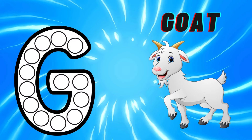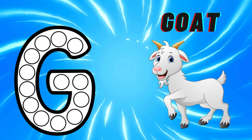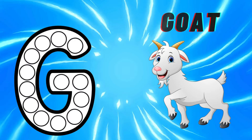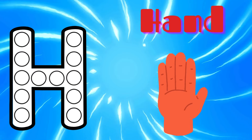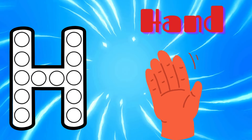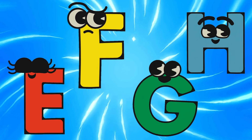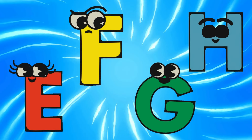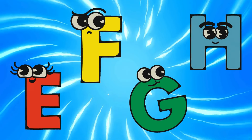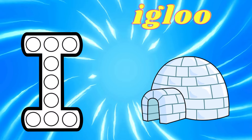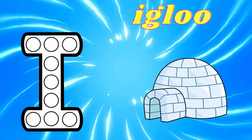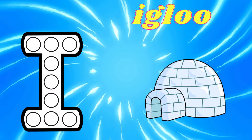G is for Goat, G-G-Goat. H is for Hand, H-H-H-Handle. I is for Igloo, I-I-I-Gloo.